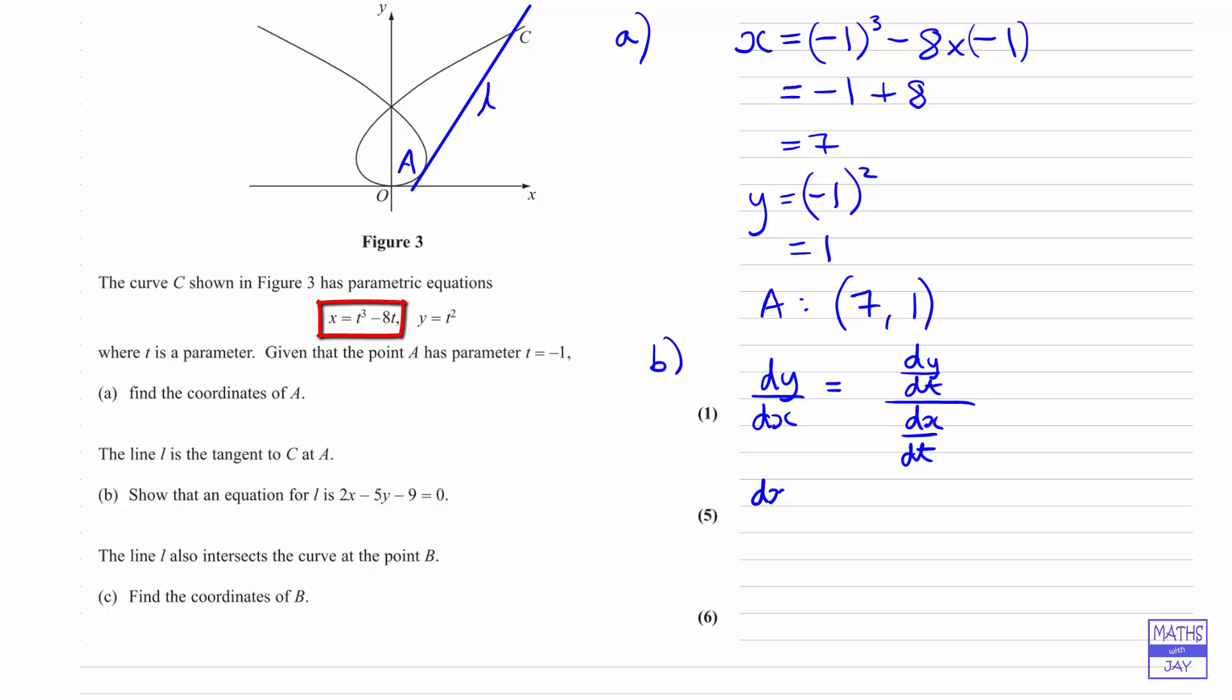So dx by dt: differentiating t cubed gives 3t squared, then subtracting 8. dy by dt: differentiating t squared gives 2t. Now using our formula, dy by dx equals 2t divided by 3t squared minus 8.